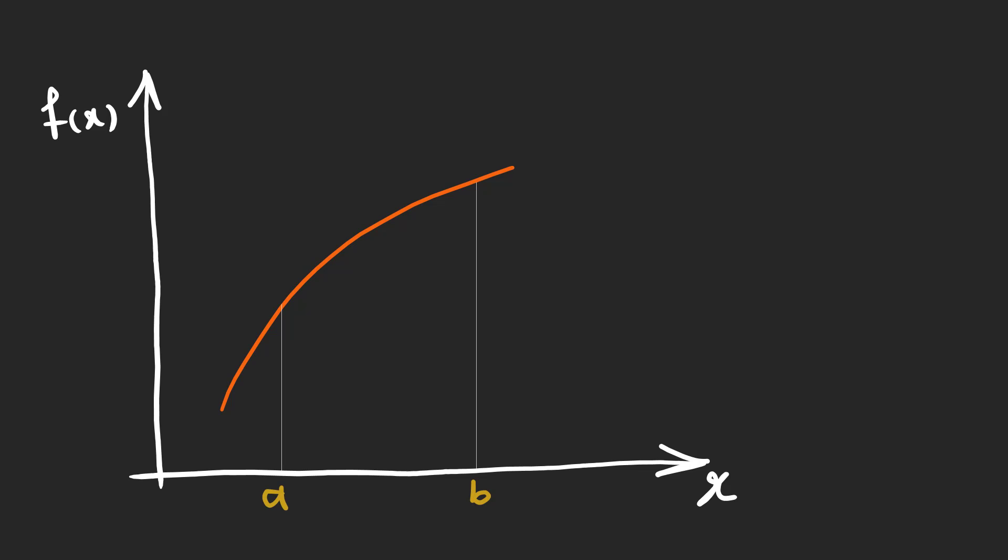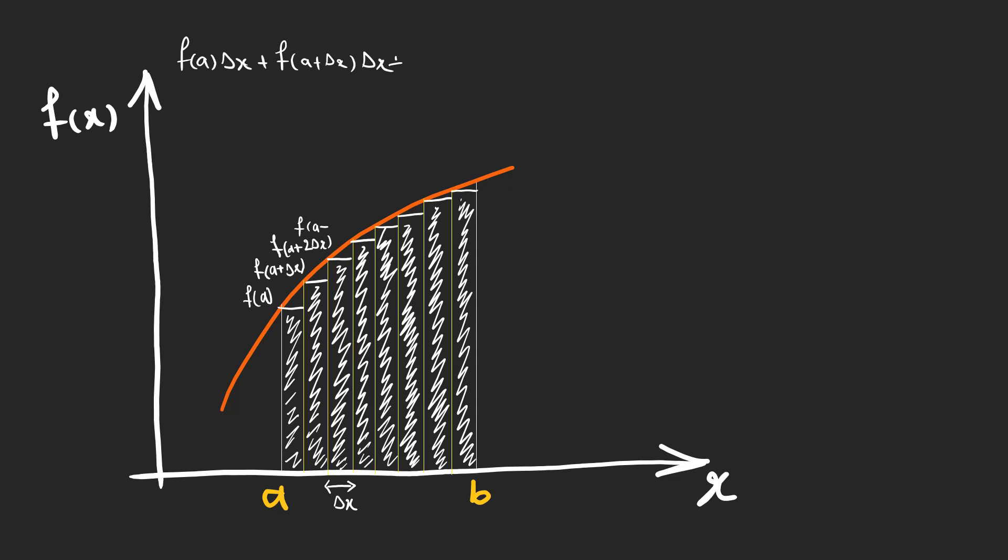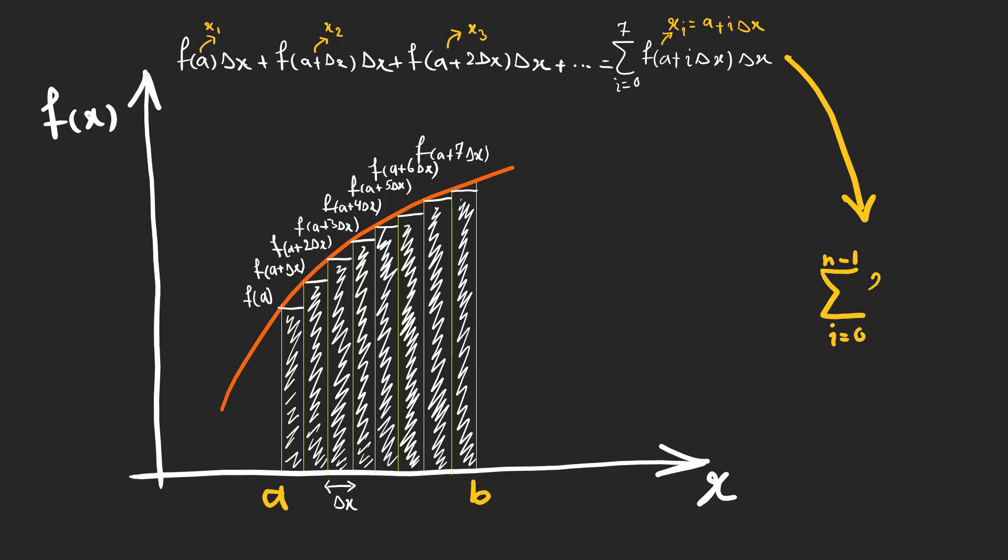Take this function as an example. We want to find the area constraint under the function graph from a to b. We can estimate the area by dividing it into several boxes and sum over the area of all boxes. But it's just an estimate and not very exact. We can rewrite the sum in this form. By taking its limit as n goes to infinity, meaning that we have infinite boxes, we have the integral of f of x from a to b which is exactly the area under the curve from a to b. This is called a definite integral.